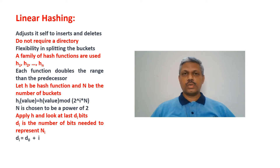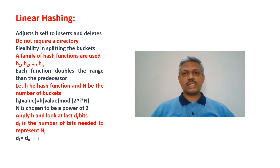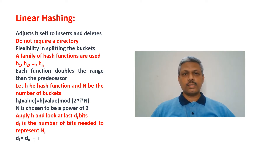In the previous lecture we talked about extendable hashing. In this lecture we talk about linear hashing, which is another dynamic hashing algorithm. The main difference is that in extendable hashing a directory of pointers is used, whereas in linear hashing no directory of pointers is used. Instead, it uses a family of hash functions and dynamically adjusts itself to the requirement. It grows and shrinks according to requirements.